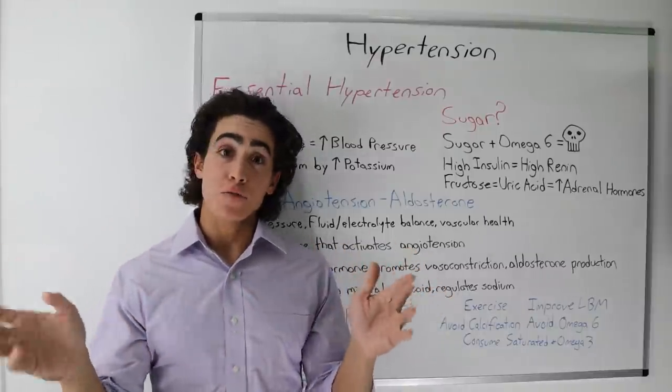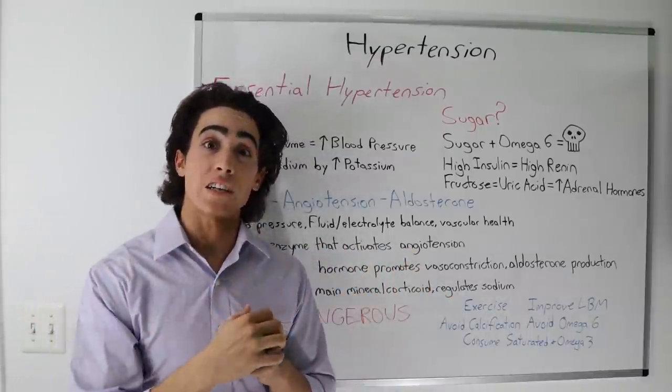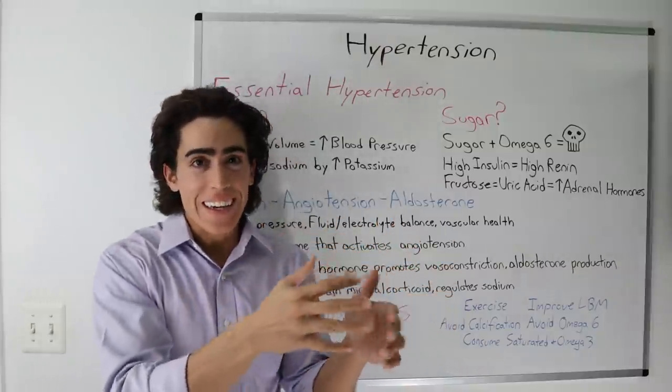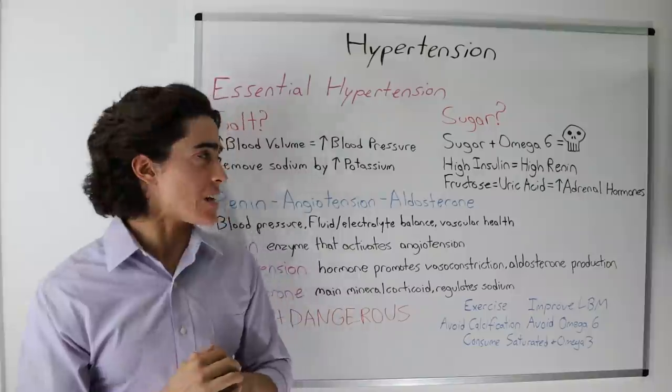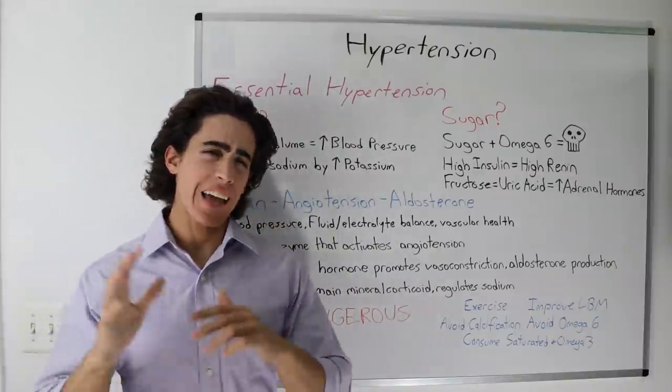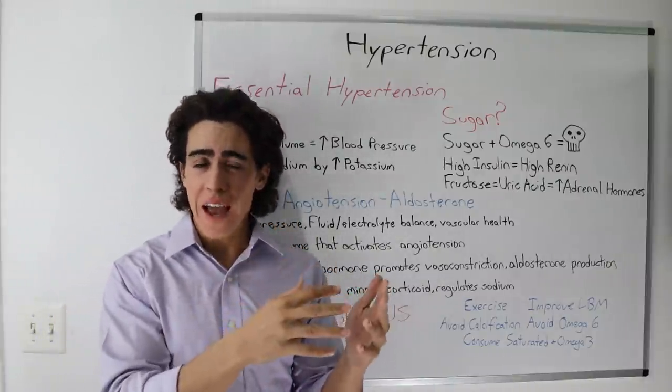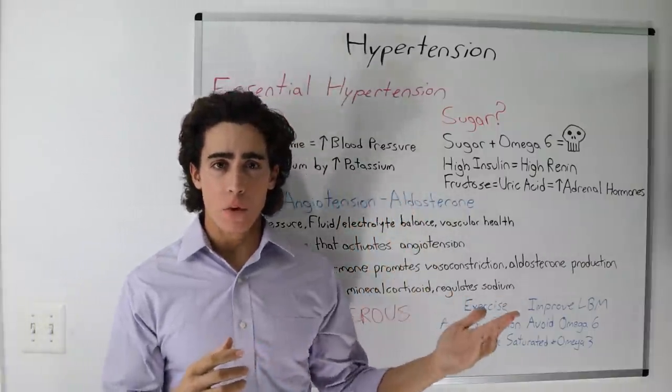90% of diagnoses for high blood pressure are called essential hypertension. We basically have no idea what's going on. The modern media tells us salt is to blame, and there is some truth to that, but sugar is likely the main culprit.